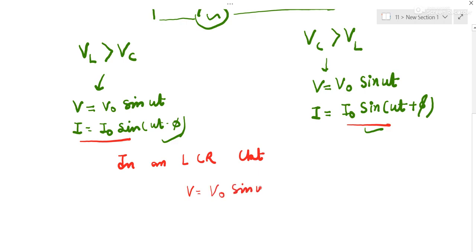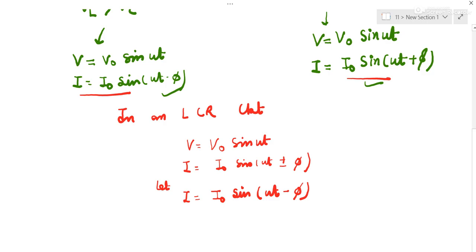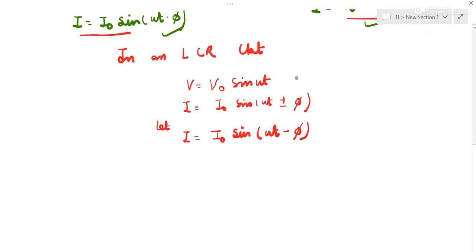We have to find out power in an LCR circuit. We can take either equation. In general, we can write: current either leads or lags by phi. So equations are written as V = V naught sin(ωt) and I = I naught sin(ωt ± φ). I am picking the negative case: I = I naught sin(ωt − φ).